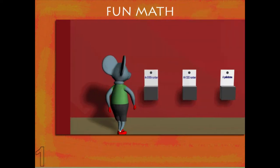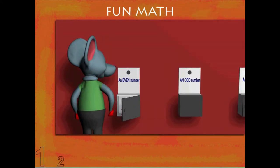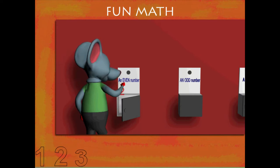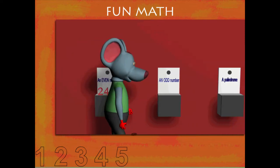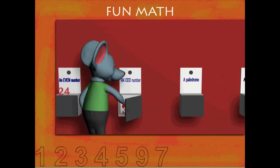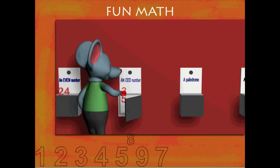Fun math. Toby Mouse is in the math lab for some fun. He opens the number box and pulls out 24, this is divisible by two. He now opens the odd number box and pulls out 35, this does not divide by two, good.